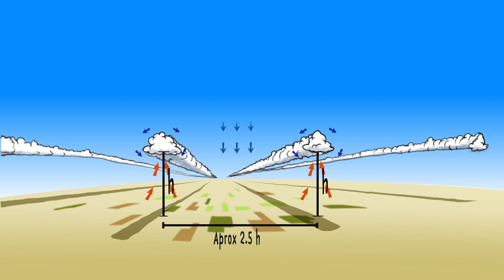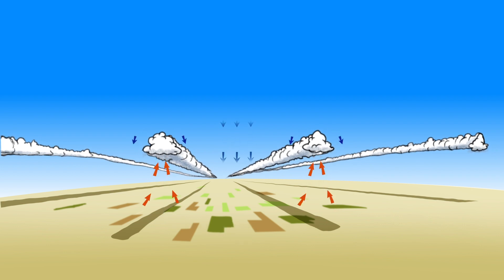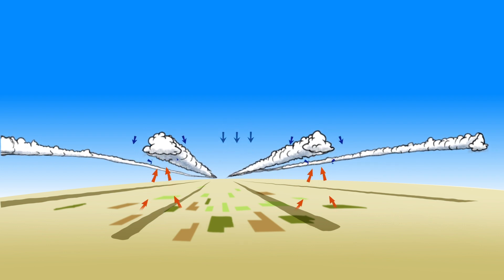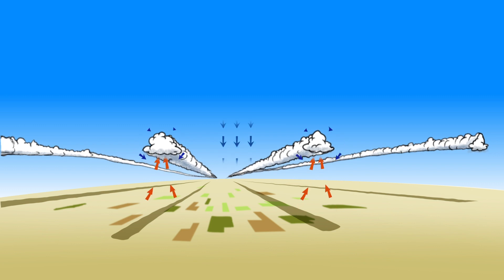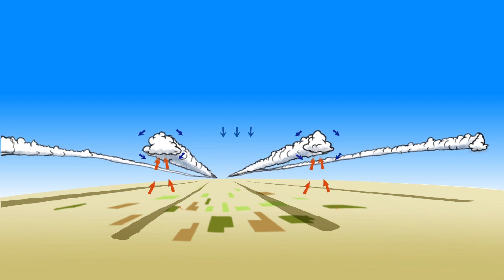Follow the street downwind and you'll find that the thermals are grouped more closely together, and sometimes you'll be able to fly straight for long periods in rising air.